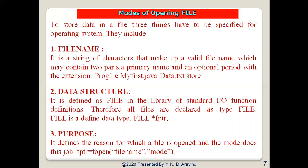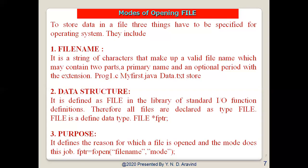We need to create a data structure defined as FILE in the standard I/O library (stdio.h). Therefore all files are declared as a type FILE, which is a defined data type used as a pointer type. The purpose of naming the file and creating a data structure is to open it and perform operations for reading, writing, or appending. The main syntax is: FILE *fp = fopen(filename, mode). There are six types of modes for opening files.